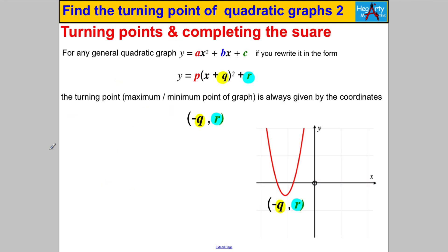In general, for any quadratic graph written in completed-the-square form as (x + P)² + Q, the turning point — whether a maximum or minimum — always has the opposite sign to P as its x-value, and exactly Q as its y-value. So if you have it in that form, you can read off that the turning point is at (−P, Q) straight away.